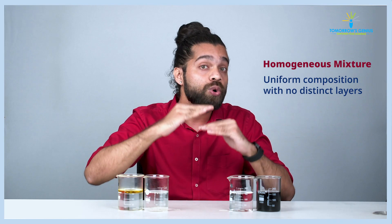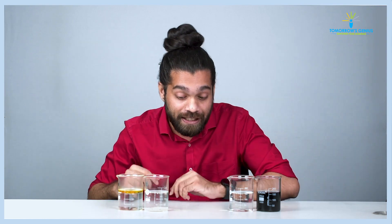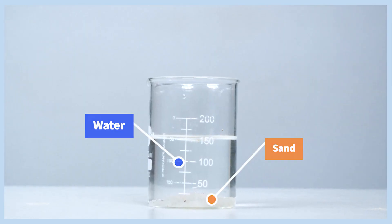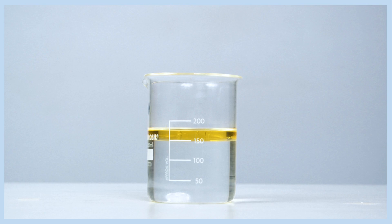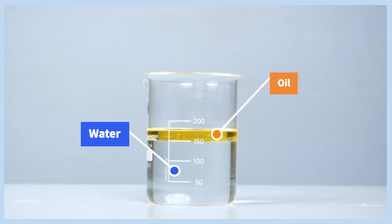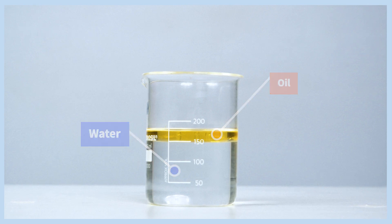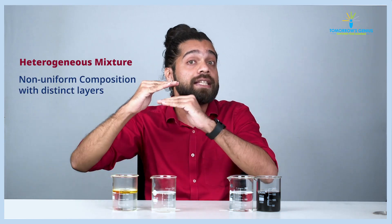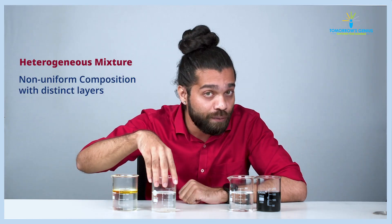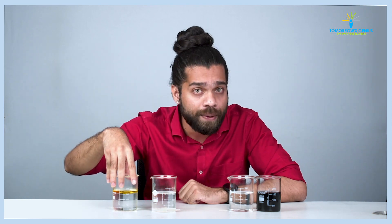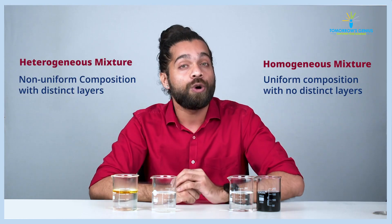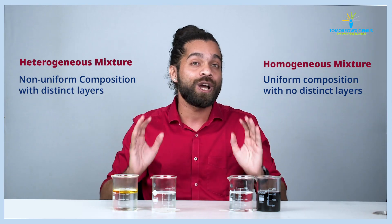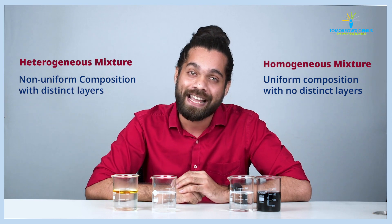Homogeneous mixture has a uniform composition with no distinct layers. But in the heterogeneous mixture, you can clearly see how the sand is settled at the bottom and water is on top. Similarly with oil, you can see two distinct layers — oil on top and water on the bottom. This is solid-and-water type, and that is liquid-and-liquid type. I hope students you have liked this activity and understood what is homogeneous mixture and what is heterogeneous mixture.